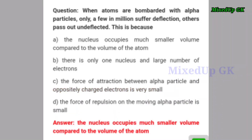Next question: when atoms are bombarded with alpha particles, only a few in a million suffer large deflection while others pass undeflected. This is because — option A: the nucleus occupies much smaller volume compared to the volume of the atom. Option B: there is only one nucleus and a large number of electrons. Option C: the force of attraction between alpha particles and oppositely charged electrons is very small. Option D: the force of repulsion on the moving alpha particles is small. The correct answer is option A.